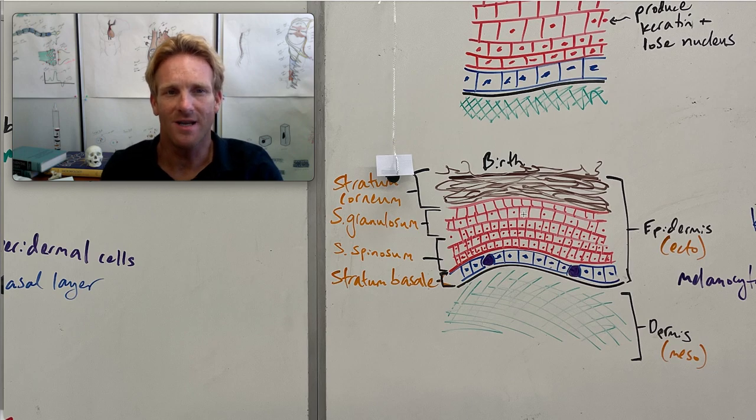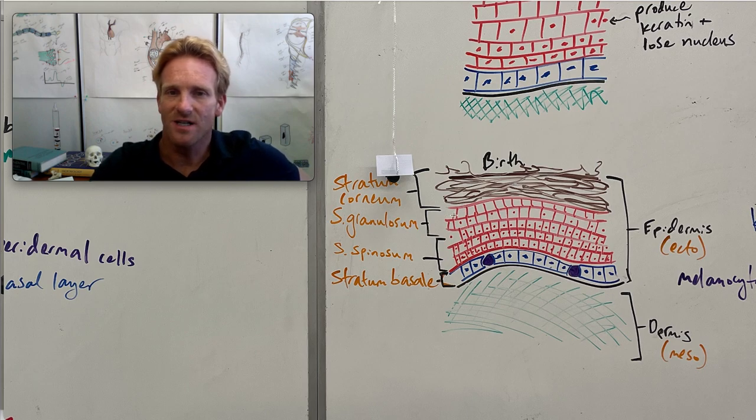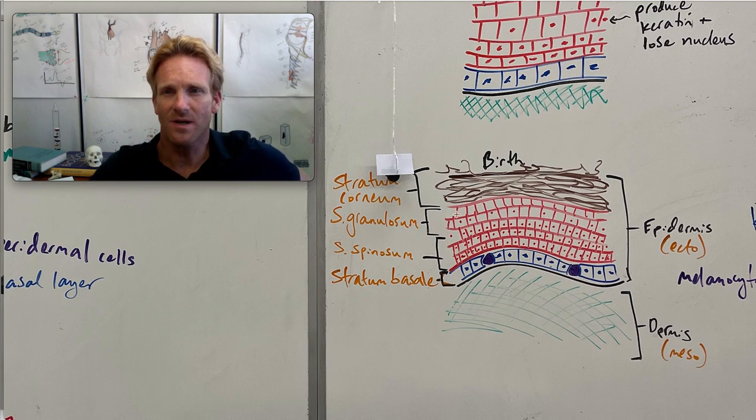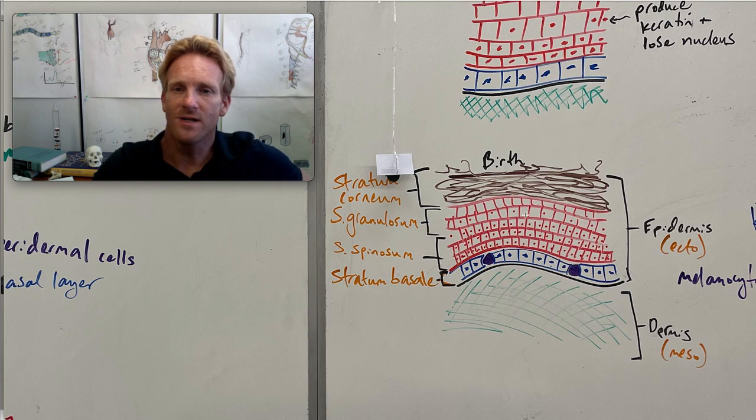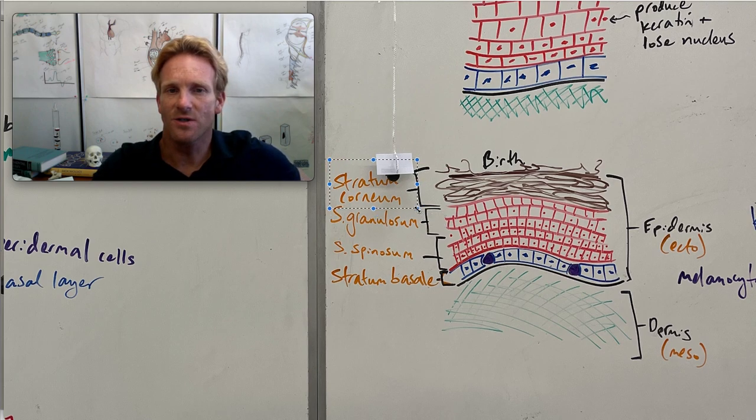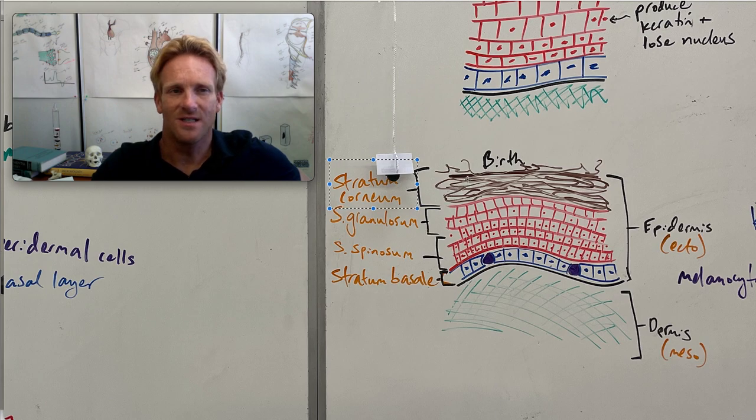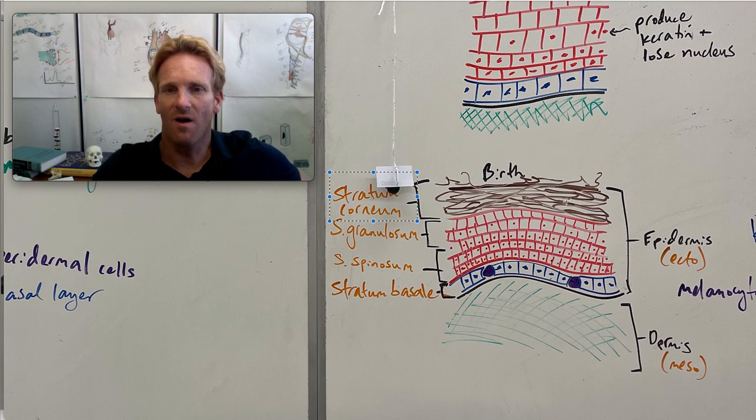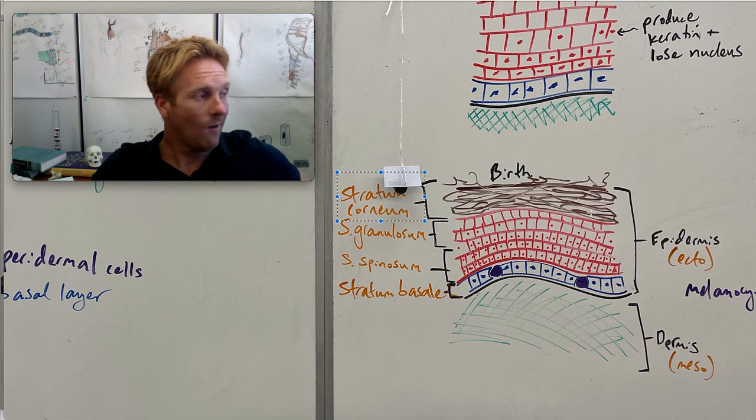They lose their nucleus and they also produce these glycolipids which create this waterproof barrier that keeps fluid in the body and keeps things out of the body. After this keratinization occurs, the cells are going to die because they cannot acquire nutrients through this waterproof layer. That produces the outer layer of skin called the stratum corneum. These consist of just dead remnants of old keratinocytes, just their cell membrane, the keratin that's left over, and they're constantly being sloughed off as the cells are produced underneath them.